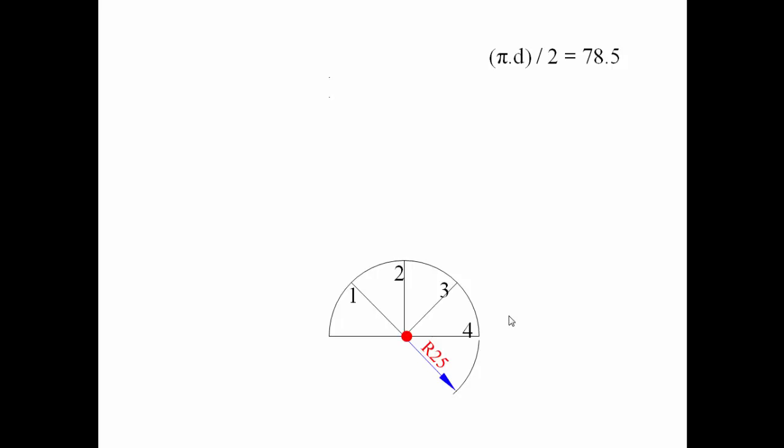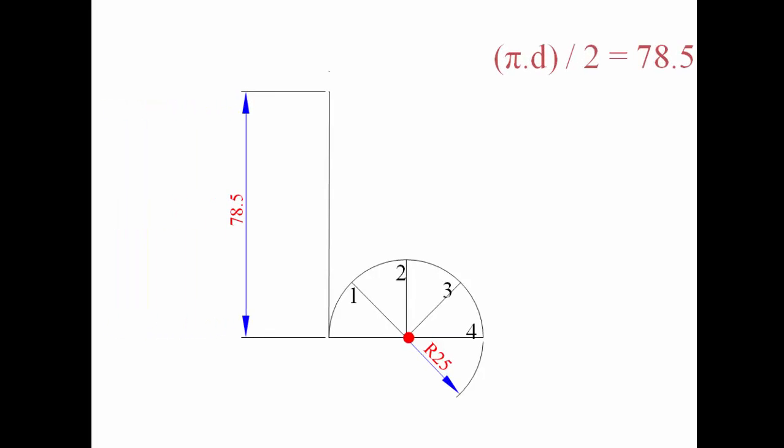Initially we have to place the rod PQ tangentially, so somewhere along this point we're going to be putting this rod tangentially. This initial length is going to be equivalent to the circle circumference, that is 78.5.